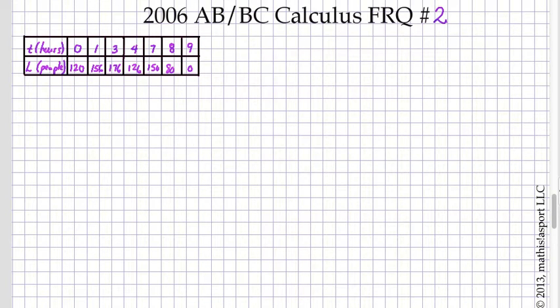In this problem, we've got people that are lining up to buy tickets for a concert. They start out at noon, and what we have is a function L that gives us the length of the line, the number of people that are waiting in line to buy tickets.